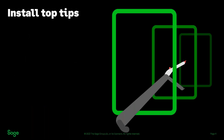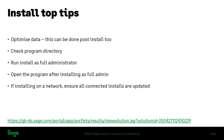Let's get into it and start with the first section: install top tips. The first tip is to optimize your data — this can be done before or after the install. What optimizing does is reduce the size of the data and tidy it up in the background, making it easier to upgrade when you've done your install.